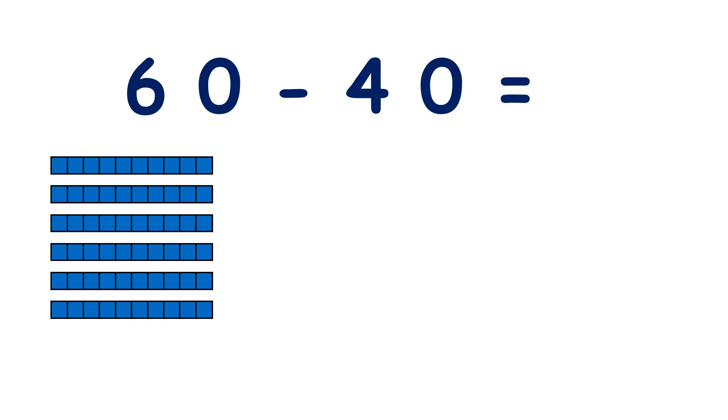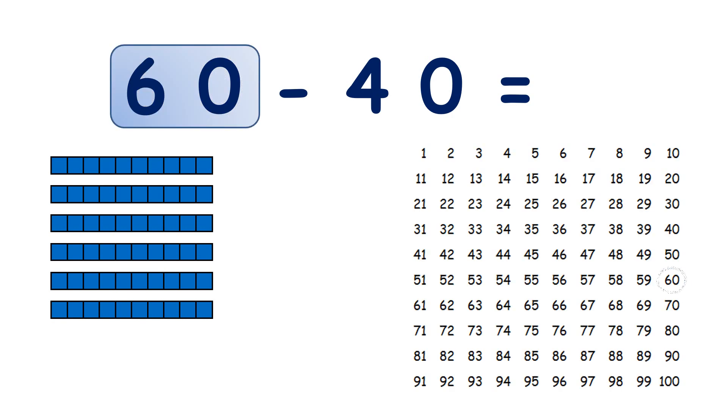We have 60 minus 40, so we start with 60. Let's find 60 on our 100 square, and we're subtracting 40, so we need to take away four tens.